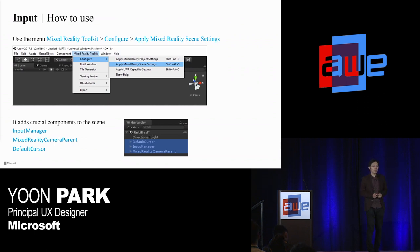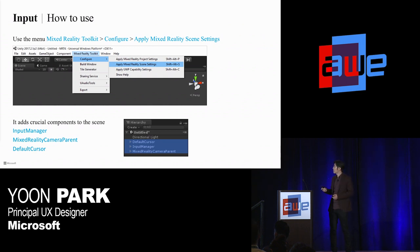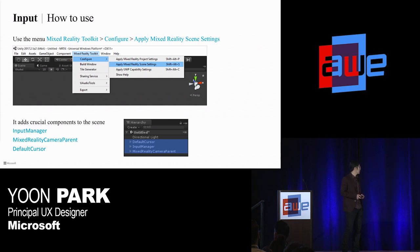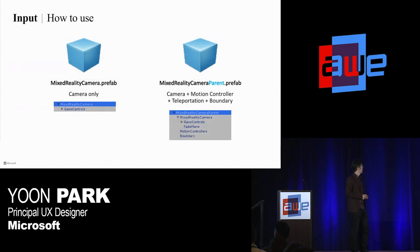When you import the MRTK release package, or if you clone it from GitHub and open it in a Unity project, you'll find this menu called Mixed Reality Toolkit. Under there, you can find a new menu called Apply Mixed Reality Scene Settings. That menu automatically applies the crucial components such as input manager, a Mixed Reality Camera, and the default cursor. You can also manually find and add these prefabs through the project panel. When you search Mixed Reality Camera, you'll find two different cameras.